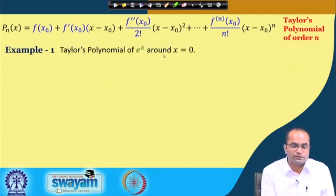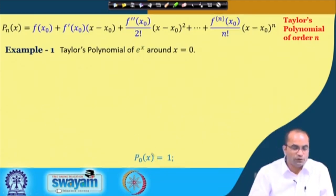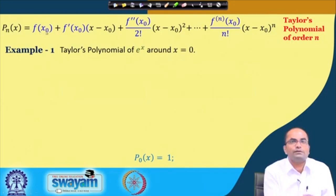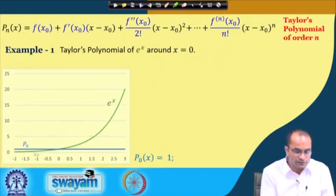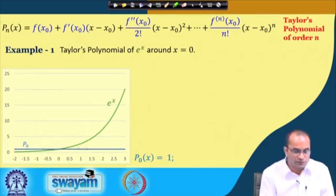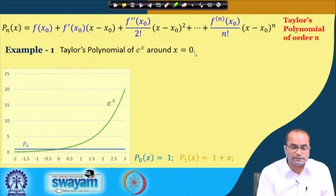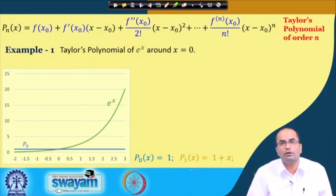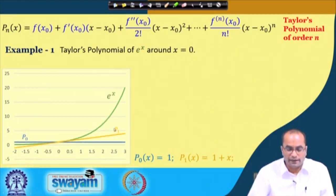Going through an example, let's construct Taylor's polynomial of the exponential function eˣ around x = 0. The degree-0 polynomial p₀(x) = e⁰ = 1, which is just a constant line — plotted here in green. For degree 1: f(0) = 1 and the derivative of eˣ at 0 is also 1, so p₁(x) = 1 + x, which is a straight line with slope 1.